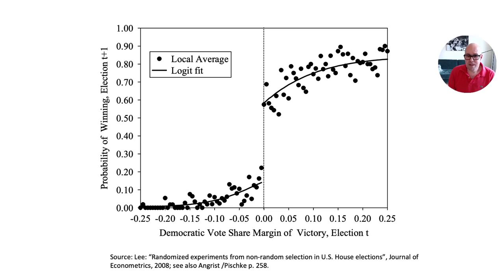Looking at the figure: on the horizontal axis is the Democratic vote share margin of victory in election t (the first election), and on the vertical axis is whether they win again in election t+1. When they just win in t, the probability of winning again is around 60%; when they just don't win, it's about 10–15%. So the effect of just winning is positive. Since yi is a binary outcome — whether you win the next election — they used a logit model to estimate the conditional expectation.